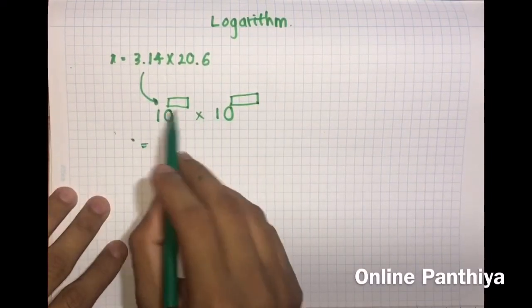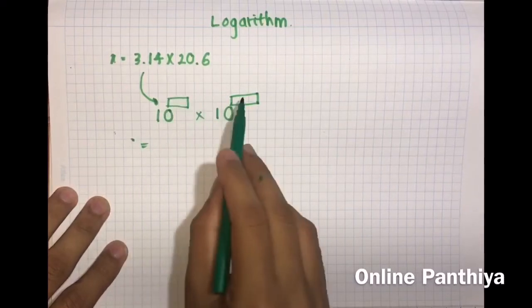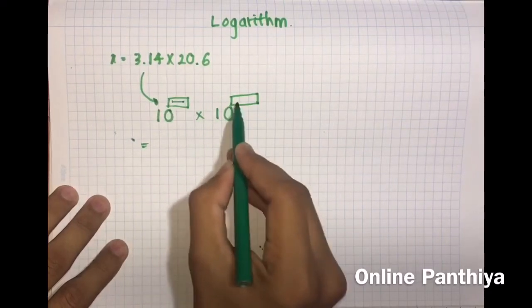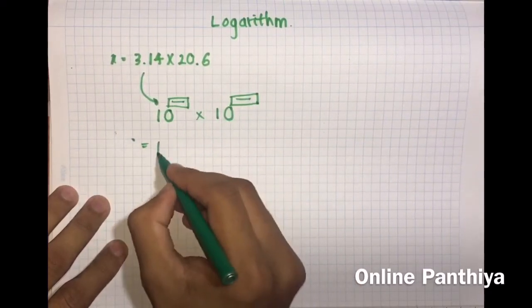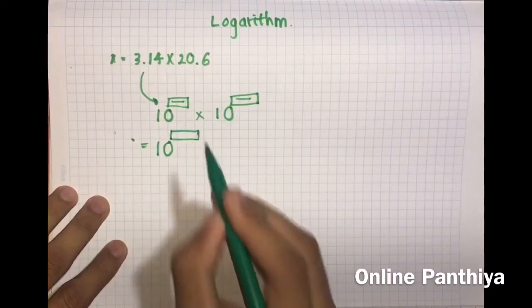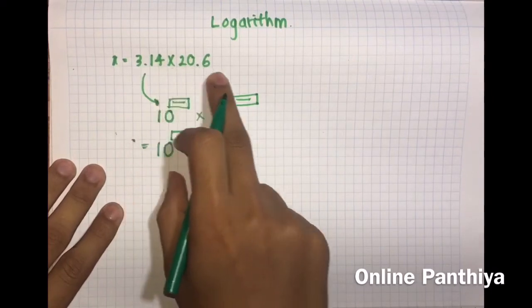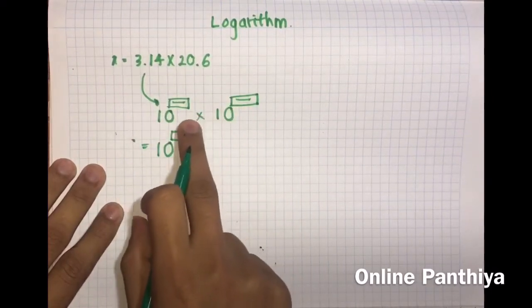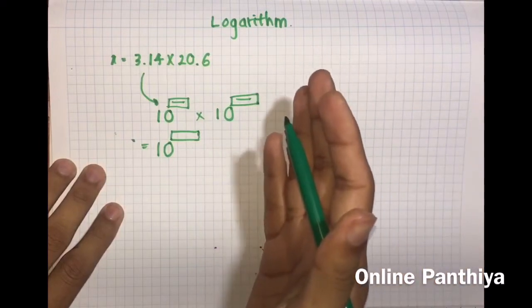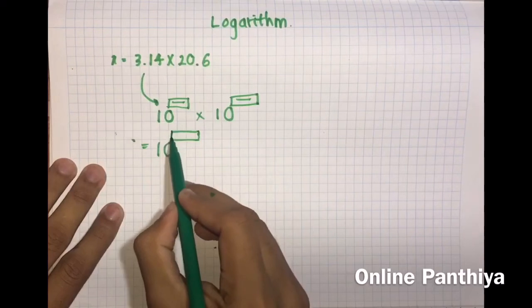Now we have written both numbers as powers of 10. When you have multiplication and the bases are the same, what happens to the powers? They get added. So you add the two powers and write them with the common base of 10. You had multiplication, but once we came to this part, the multiplication turned into addition. Addition is easier than multiplication.